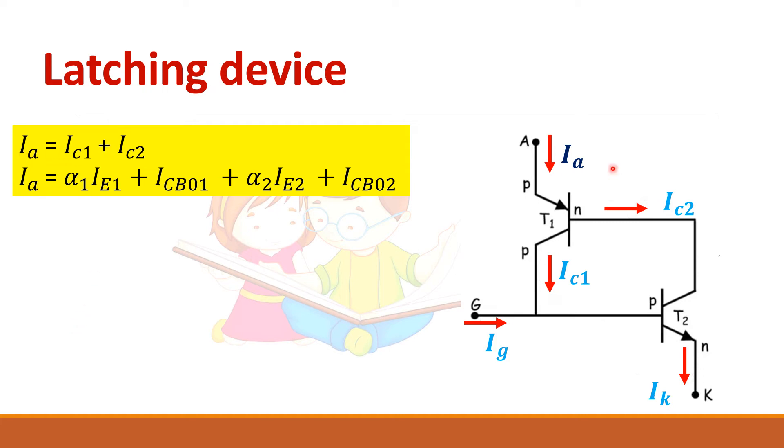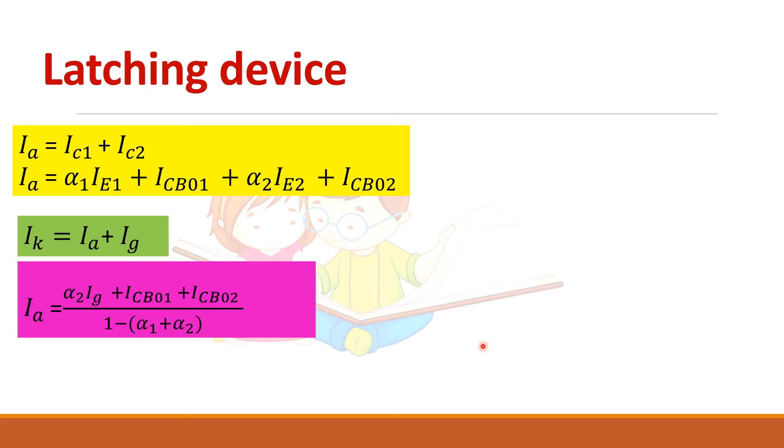So IEA is equal to IC1 plus IC2 and you substitute for IC1 and IC2 from the previous equations. Then second equation is IK is equal to IC1 plus IG. And if you solve all these equations, you will get this one. It is a simple calculation.